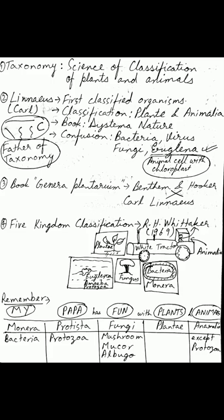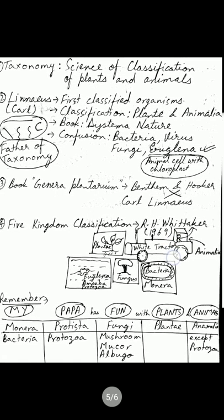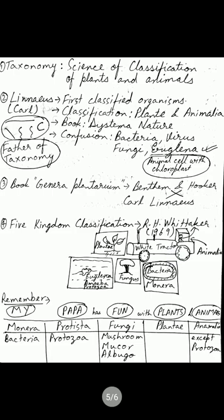R.H. Whittaker did a five-kingdom classification of organisms. To remember this, picture a white tractor — 'white tractor' helps you recall Whittaker. He did this in 1969 — the summer of '69 — when he was out in the fields on a white tractor observing different plants, animals, and other organisms.